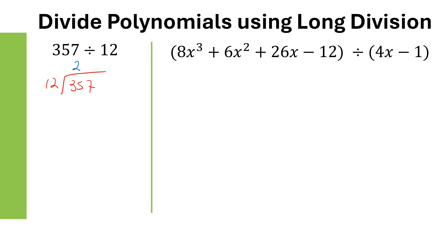Then you're going to multiply: 2 times 12 is 24. Then subtract 24 from 35, which gives us 11. Now we bring down the next term, which is 7.